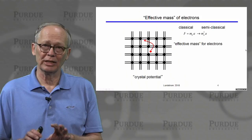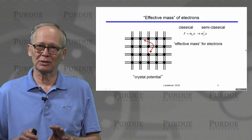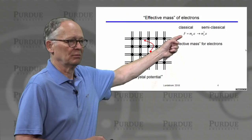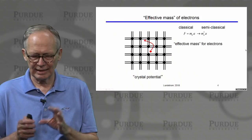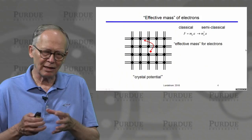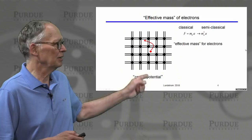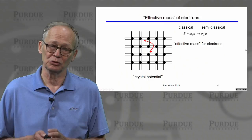This is one of the triumphs of condensed matter physics — it turns out that there is an especially simple way to handle this, which preserves the use of Newton's laws. For a classical particle, F equals ma. For electrons in a crystal lattice behaving as classical particles, all of these complicated forces can be wrapped into something we call an effective mass. Once we have that effective mass, we can use Newton's laws to compute the motion of electrons in the crystal.